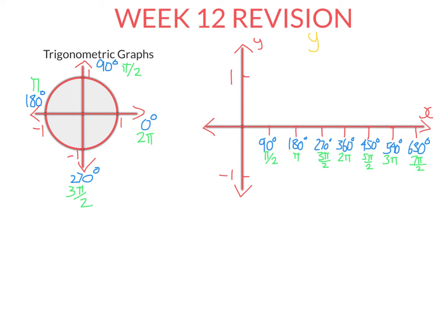Let's start with the graph. Let's say I want to graph y equals sine x. What I'm going to do is find a few points through which this graph passes and join them up. To find a few points, I'm going to use the unit circle. Remember, if we had an angle here — I've got to call this angle x because I'm doing the graph of sine x — where it hits the unit circle, the x value of this point is cos of the angle and the y value is sine of the angle. So at zero degrees, we see the y value is zero. So sine of zero is zero.